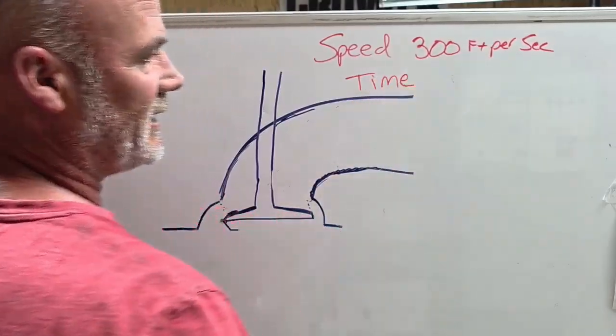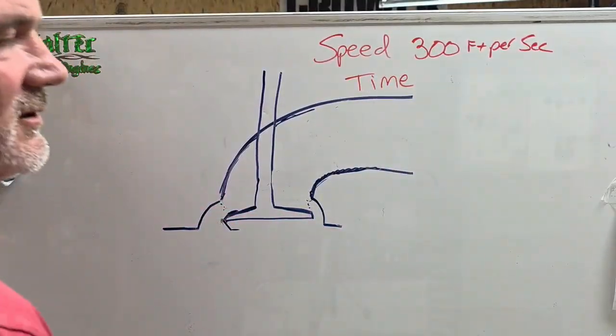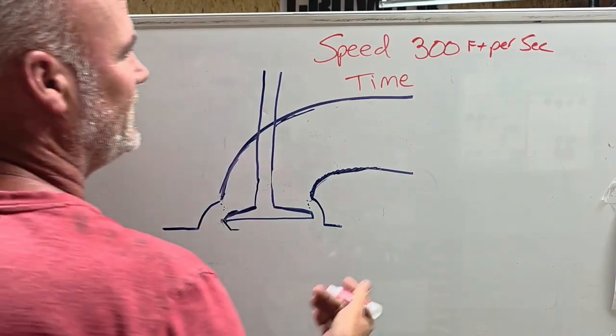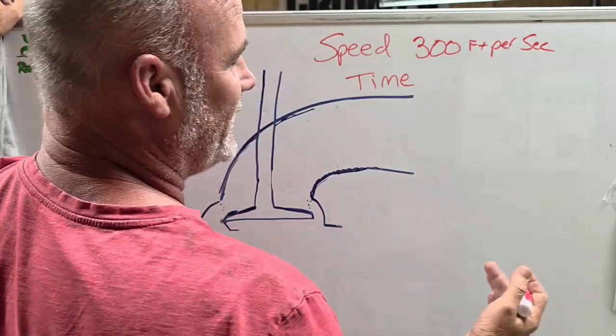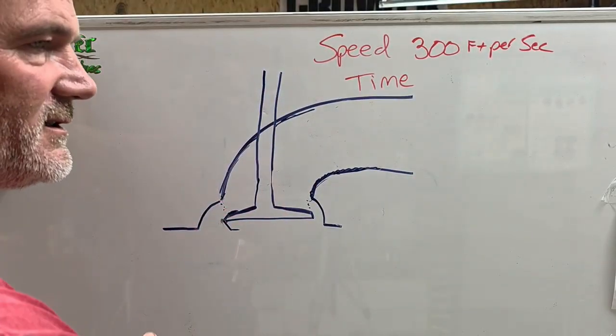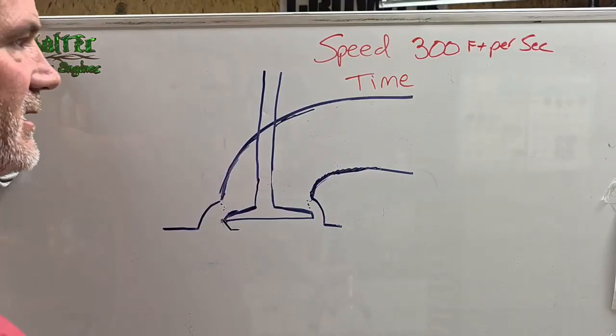Again, this was figured at 7,000 RPMs because I think Steve Morris asked how fast does the valve move at 7,000 RPMs. And I figured it two ways: total on-off, open-closed at 360 degrees of duration, and at 300 degrees of duration.